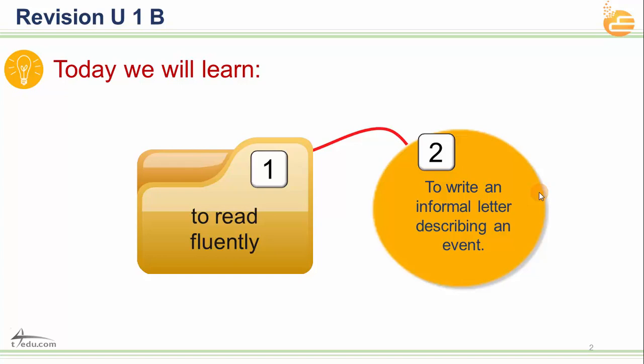Today we will learn two things. Number one, we're going to read fluently — meaning we'll remember the reading text in Unit One and apply comprehension questions: true/false and different reading skills. Number two, there's a writing section: how to write an informal letter describing an event.